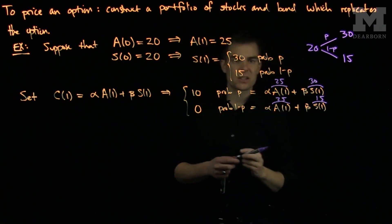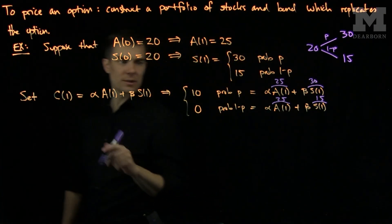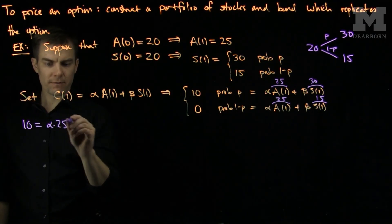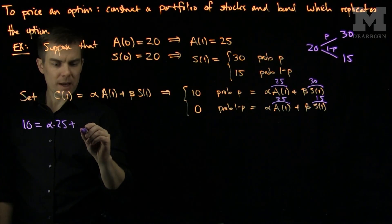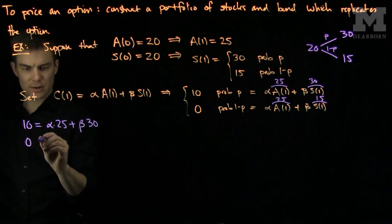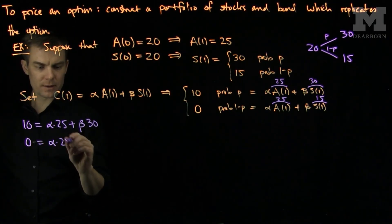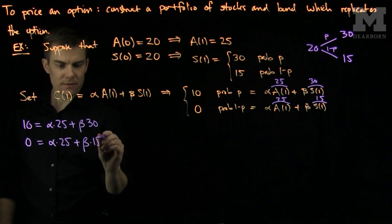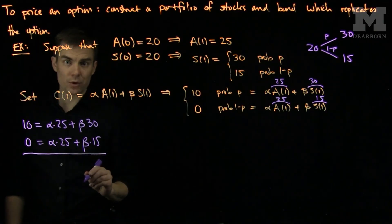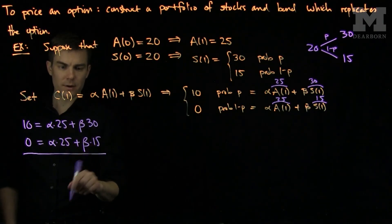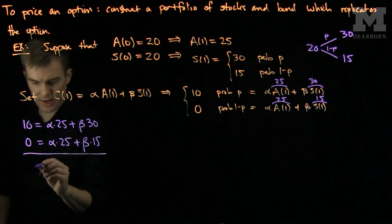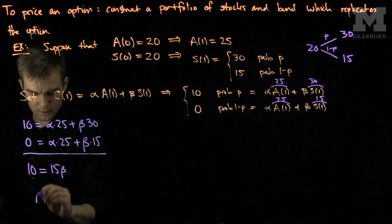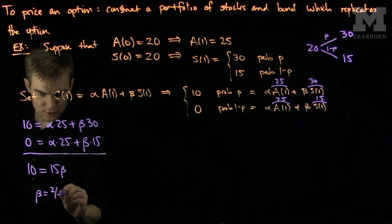So now we have the following system of equations. Our system of equations is 10 equals alpha times 25 plus beta times 30. And 0 is equal to alpha times 25 plus beta times 15. Now I will take these equations and subtract them since they both have a 25 alpha. If I subtract these equations, I will have that 10 is equal to 15 beta. So beta is 2/3.